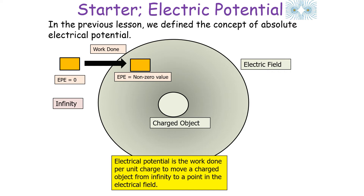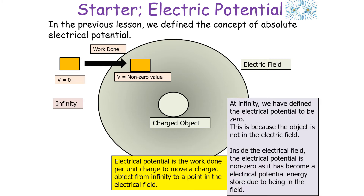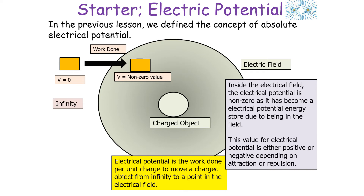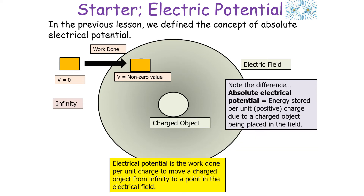Electrical potential is the work done per unit positive charge to move a charged object from infinity to a point in the electrical field. At infinity, the electrical potential is defined to be zero because the object is not in the electrical field. Inside the field the electrical potential is non-zero, and this value is either positive or negative depending on whether there's an attractive or repulsive force on the charged object.